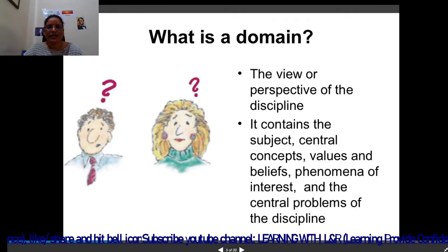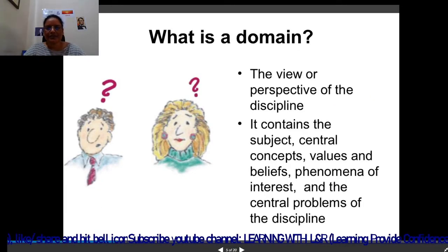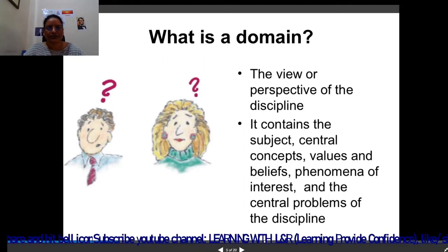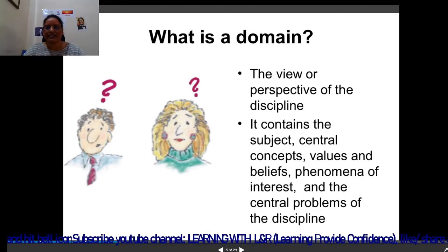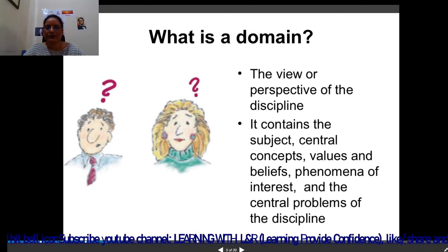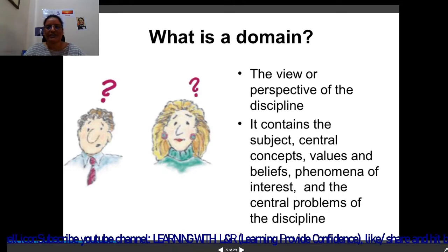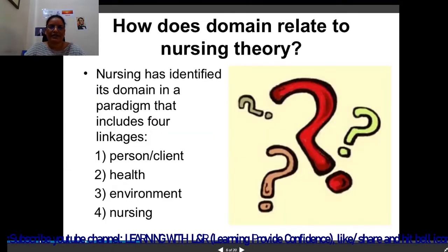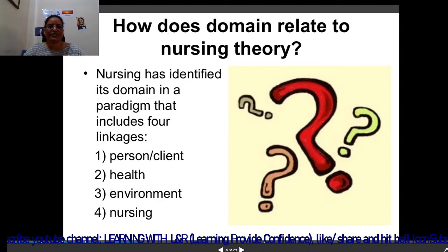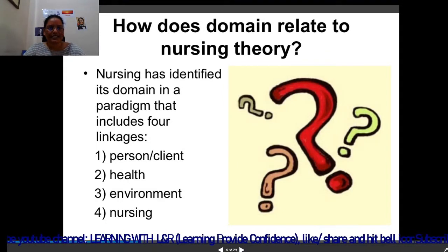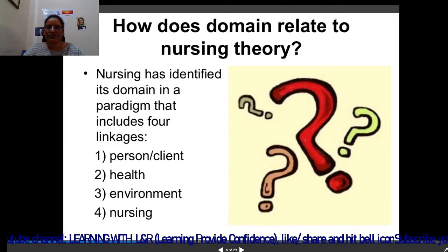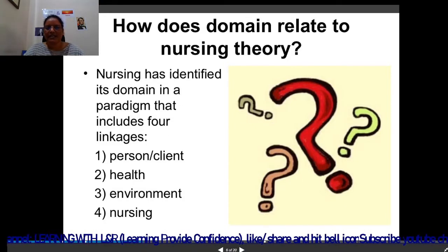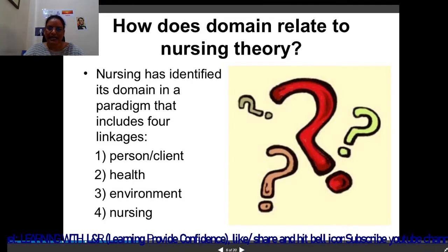Then what is the domain? The view or perspective of the discipline — the viewpoint of the profession — that is domain. It contains the subjects, central concepts, values and beliefs, phenomena of interest and the central problem of the discipline. How does domain relate to nursing theory? Nursing has identified its domain in a paradigm that includes four linkages: the link between person or client, health, environment and nursing.